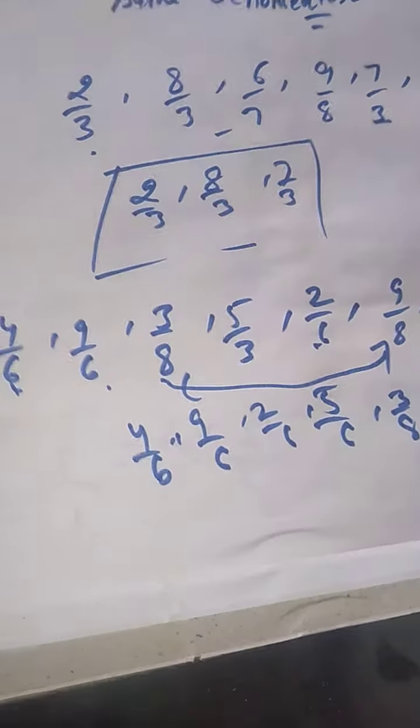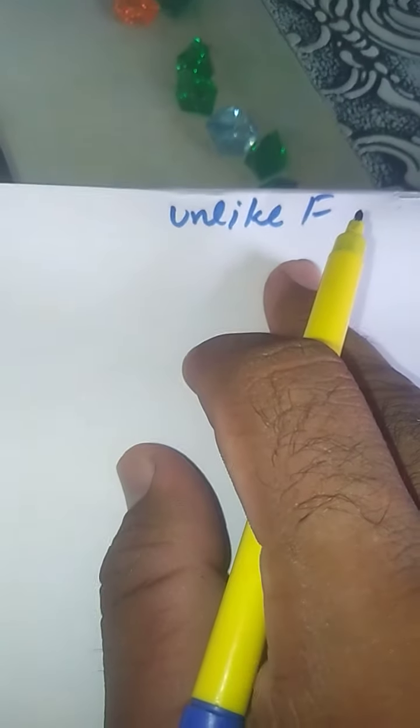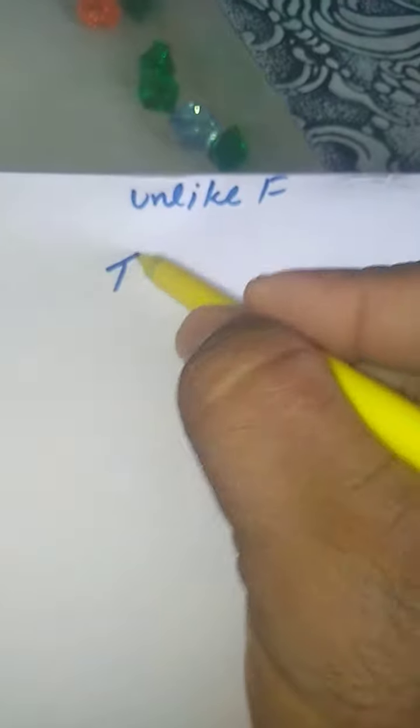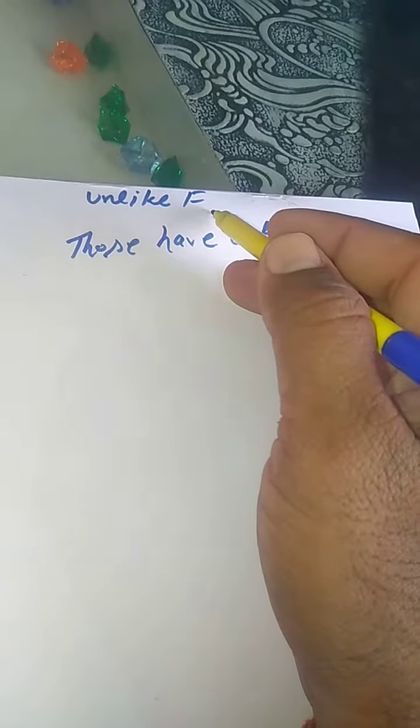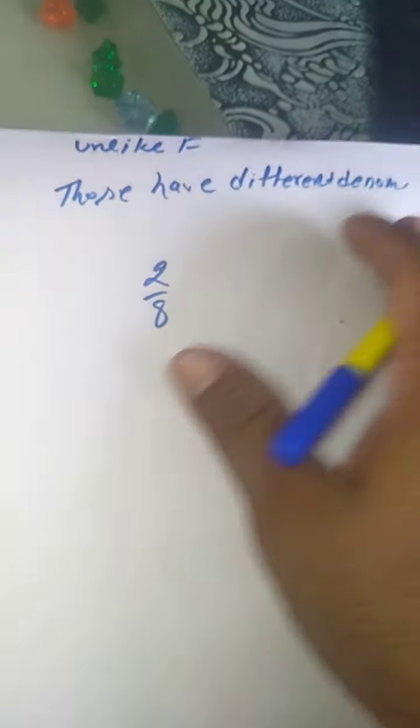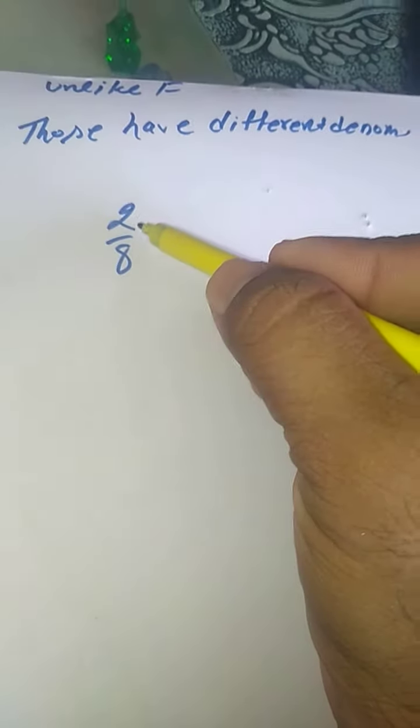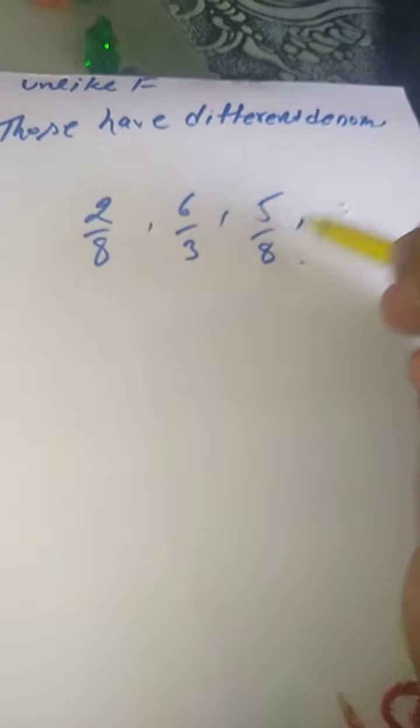Next is Unlike Fraction. Unlike fractions are those that have different denominators — जिनका denominator same नहीं होता वो Unlike Fraction होती हैं। For example: 2/8, 6/3, 5/8, 9/4, and 6/9 — इनमें से 8 and 8 like हैं, बाकी 6/3, 9/4, and 6/9 सभी Unlike Fractions हैं।